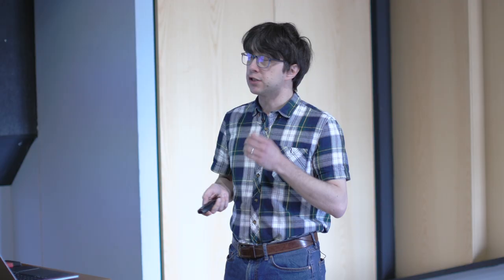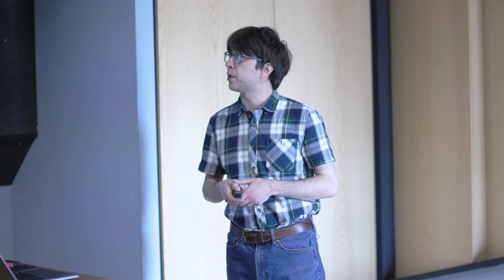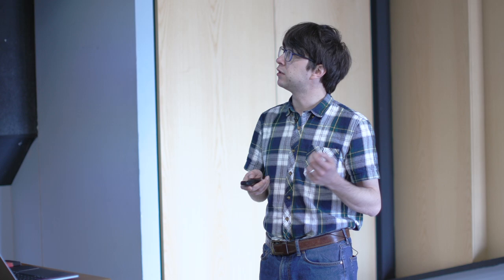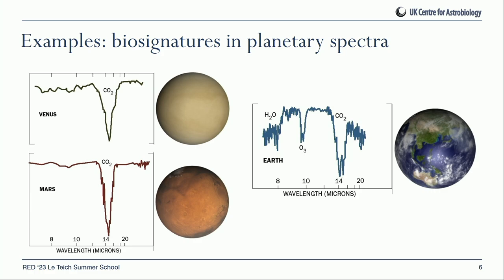I'm going to go through a few examples of biosignatures in astrobiology in different contexts. If we're looking at the transmission spectrum of the atmosphere of a planet, you can see absorption features due to various molecular species. In the case of Earth, unlike Mars or Venus, you can see oxygen and ozone, a marked presence of carbon dioxide, and there's even methane as well. So you have not just oxygen, but also a disequilibrium between oxygen and other things — implying some process that's producing oxygen alongside these other things.